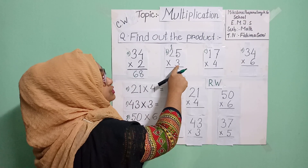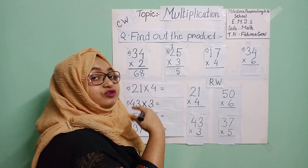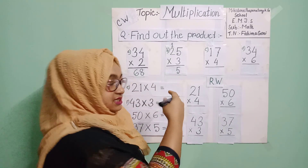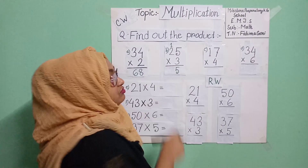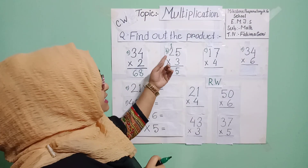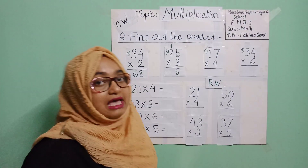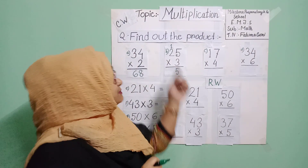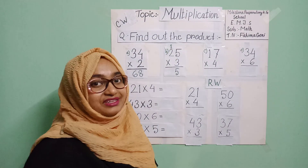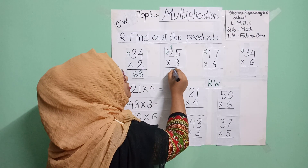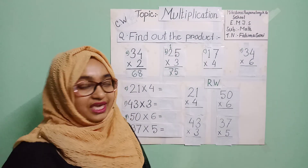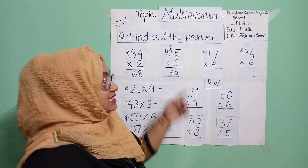Then we do the tens place. Three twos are six, then six plus one is seven. Very good — I know everyone has given me the answer. So the answer for problem B is seventy-five. Very good!